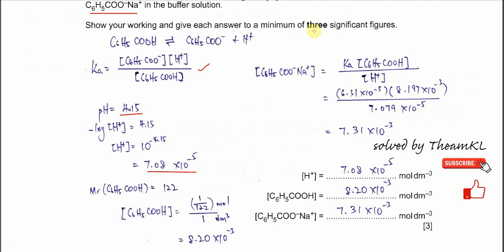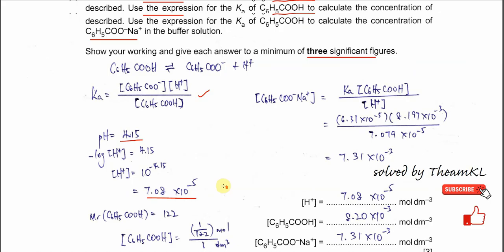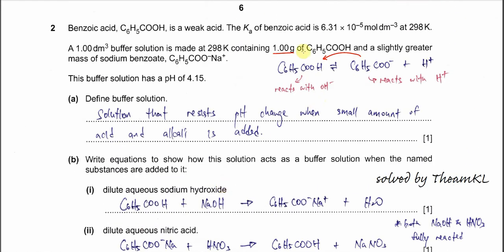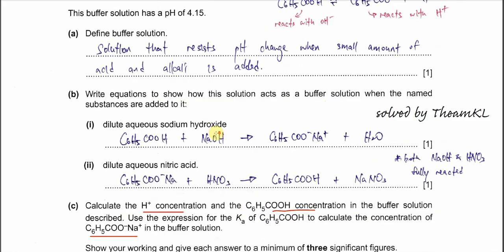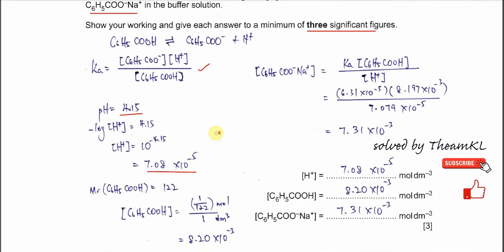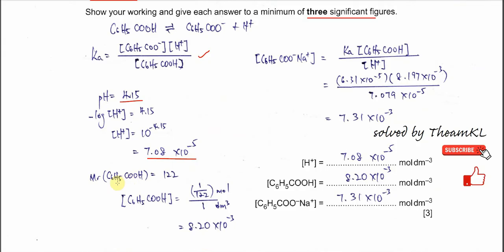Because it says minimum 3 significant figures, we just let the answer be 3SF. After that we need to calculate the concentration of acid, because the mass of benzoic acid given is 1 gram. Then we can use this gram to calculate the moles. First you need to get the molar mass of benzoic acid, which is 122. So 1 gram over molar mass we get the moles. And after that, this mole is over 1 dm^3, and we get 8.20 times 10^-3.